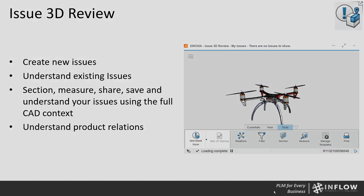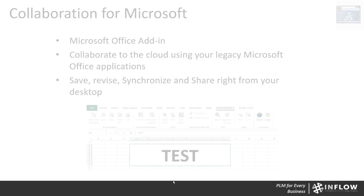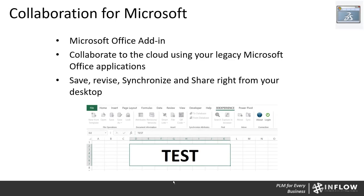Next we're going to talk about Collaboration for Microsoft. This is a separate install — a connector that allows you to keep using your legacy Microsoft Office products like Excel, Word, or PowerPoint, but still collaborate to the cloud. Once installed, you see a 3D Experience tab inside Microsoft Office products. From there you can save files, lock them, revision them, create attributes and metadata, and share with the cloud while still using those legacy applications you're used to today.